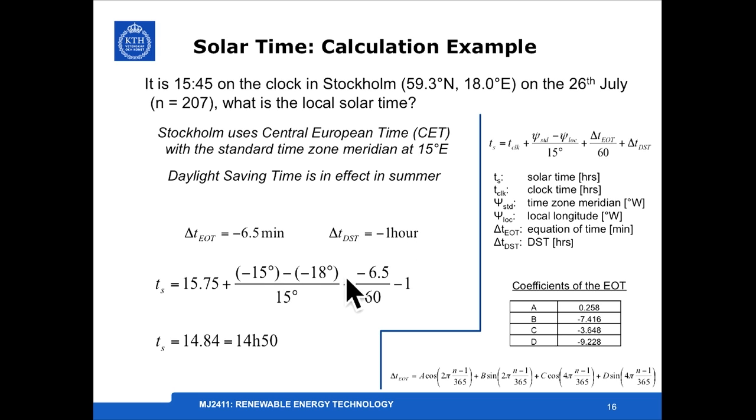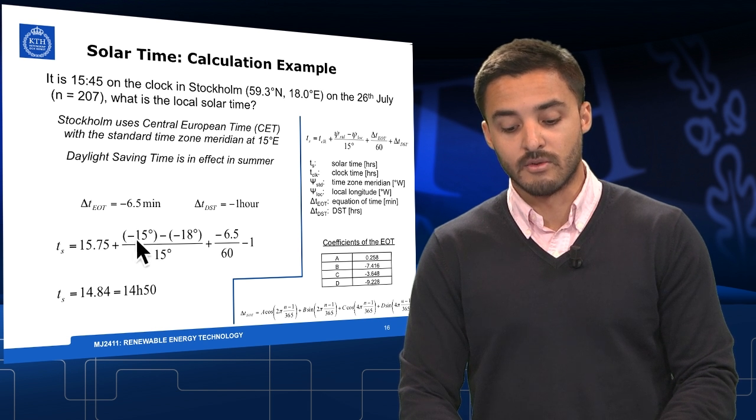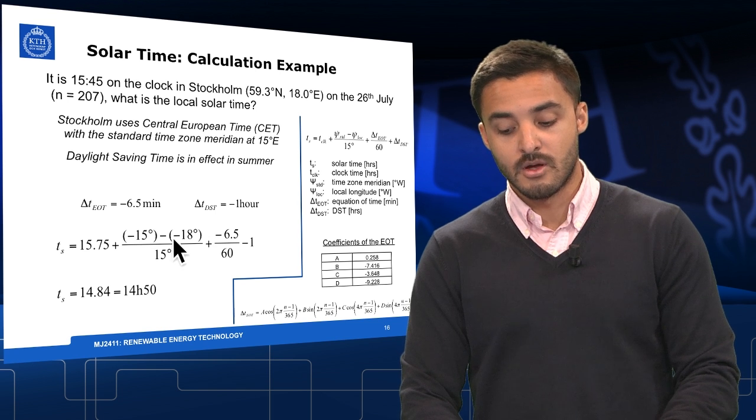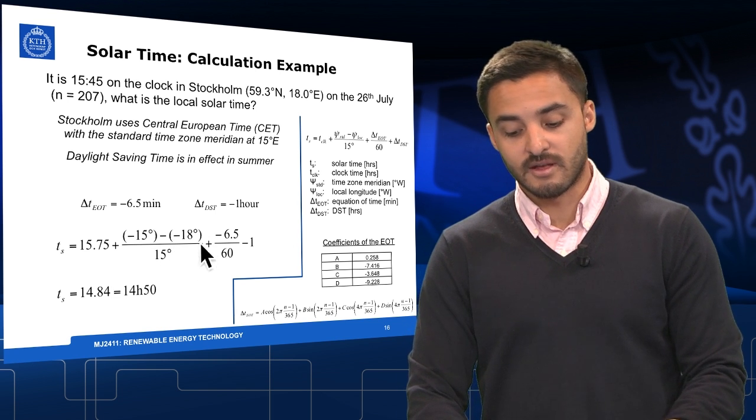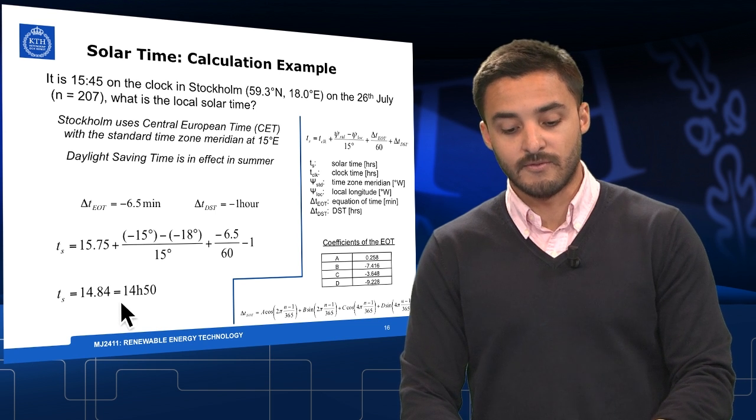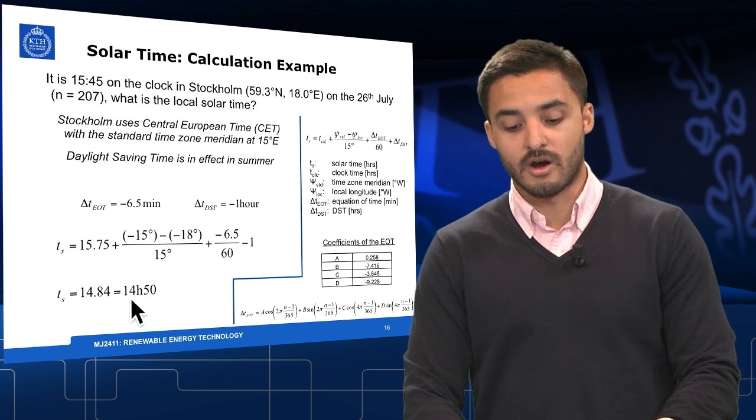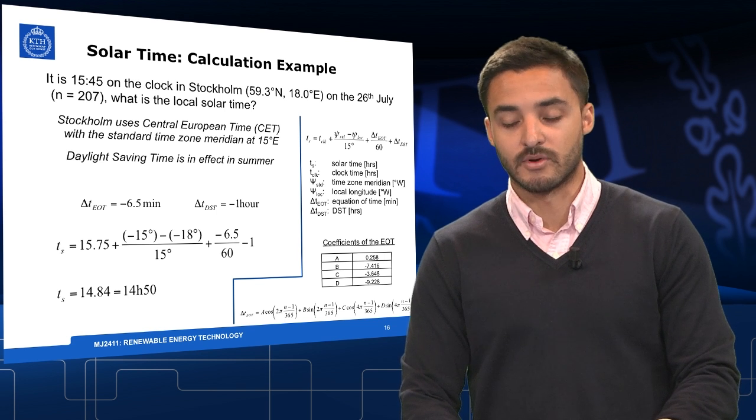The last correction is just between the actual longitude and the standard meridian used for the time. It's important to notice that it's measured on west, so that's why the minus here on both minus 15 and minus 18. With these correction factors, by replacing them, we are able to calculate that the solar time for that specific clock time on that day in Stockholm is 14:50. We are more than one hour behind when compared to clock time.